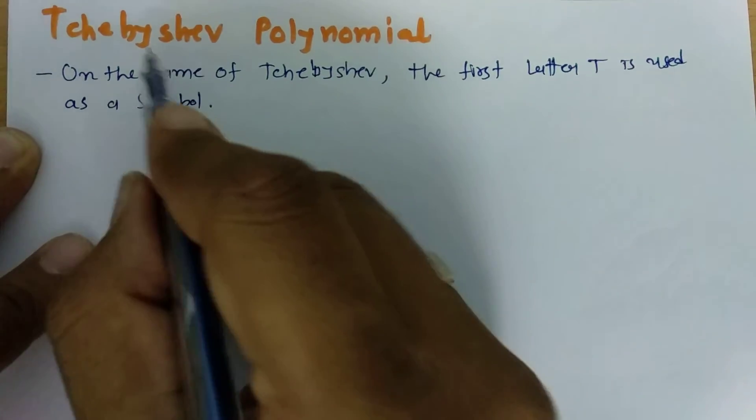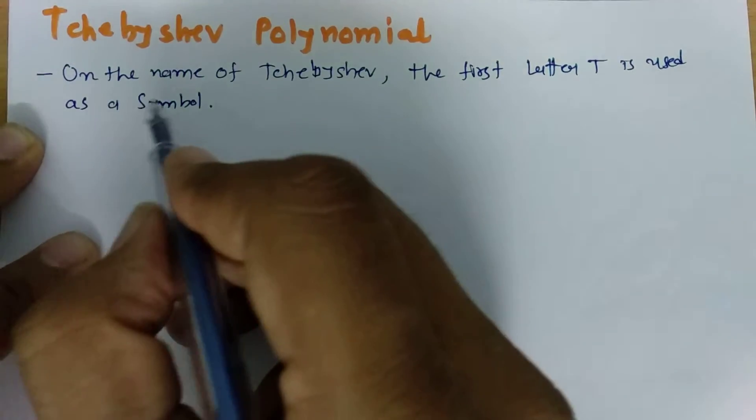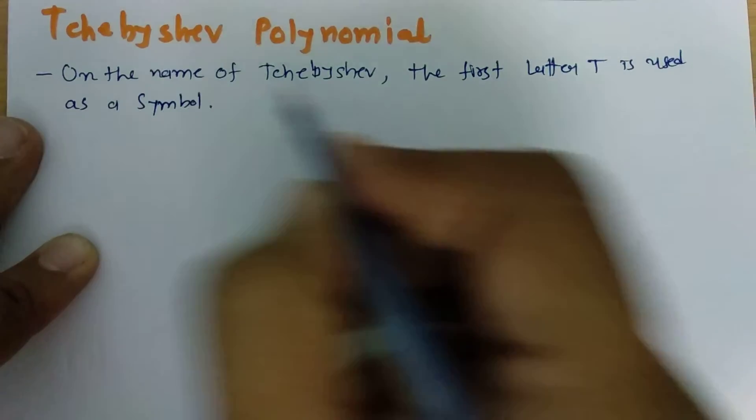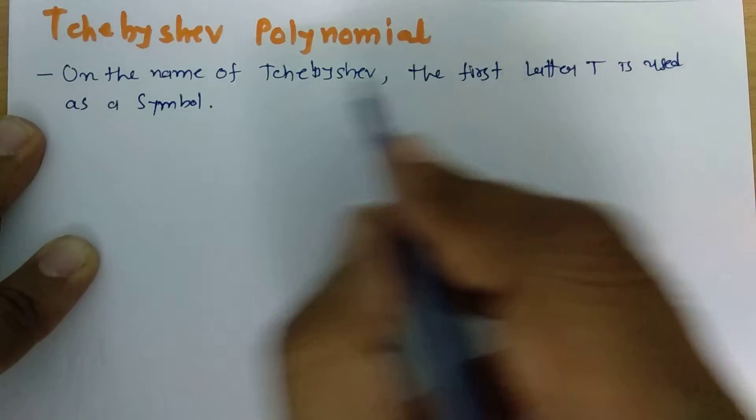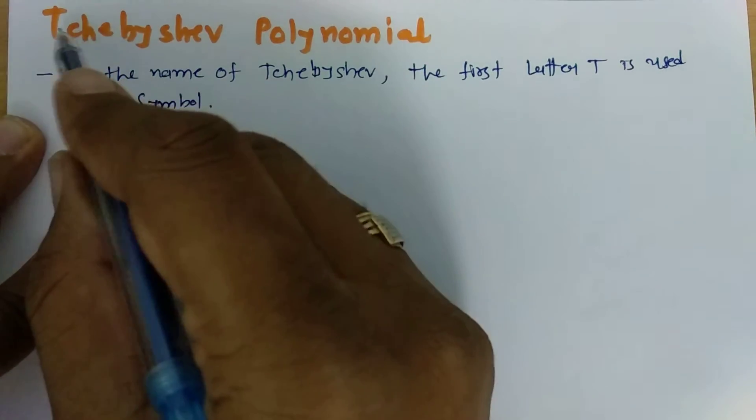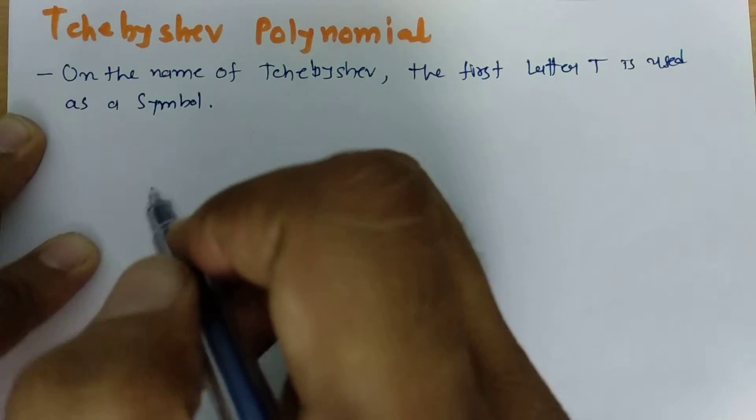I will be deriving the polynomial which is having symbol T, and that is based on Chebyshev.